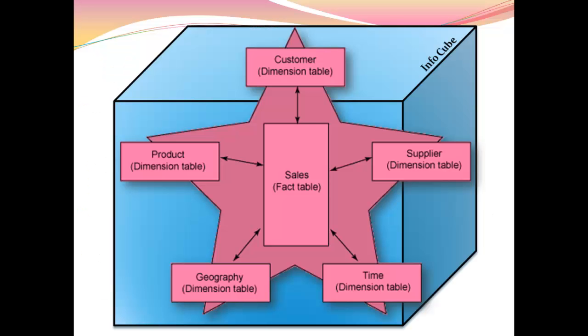This is how our star schema looks like — a fact table surrounded by dimension tables. A maximum of 16 dimension tables can be attached to our fact table. These are connected with primary keys, and since a table can contain a maximum of 16 primary keys, the maximum number of dimensions possible is 16.